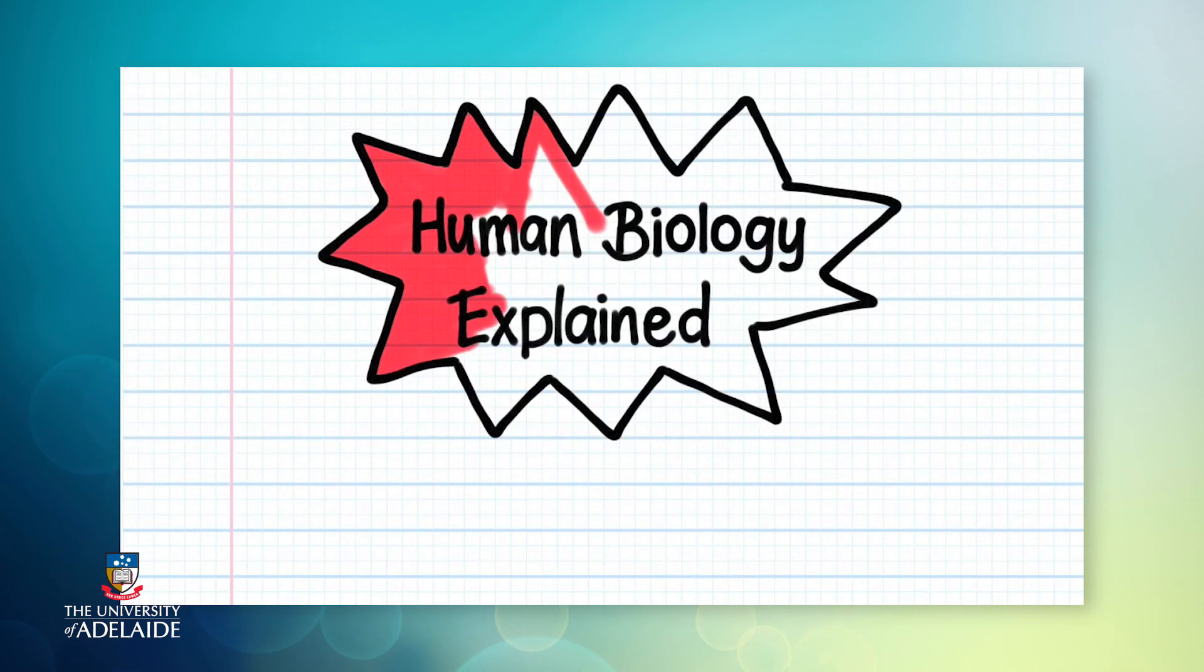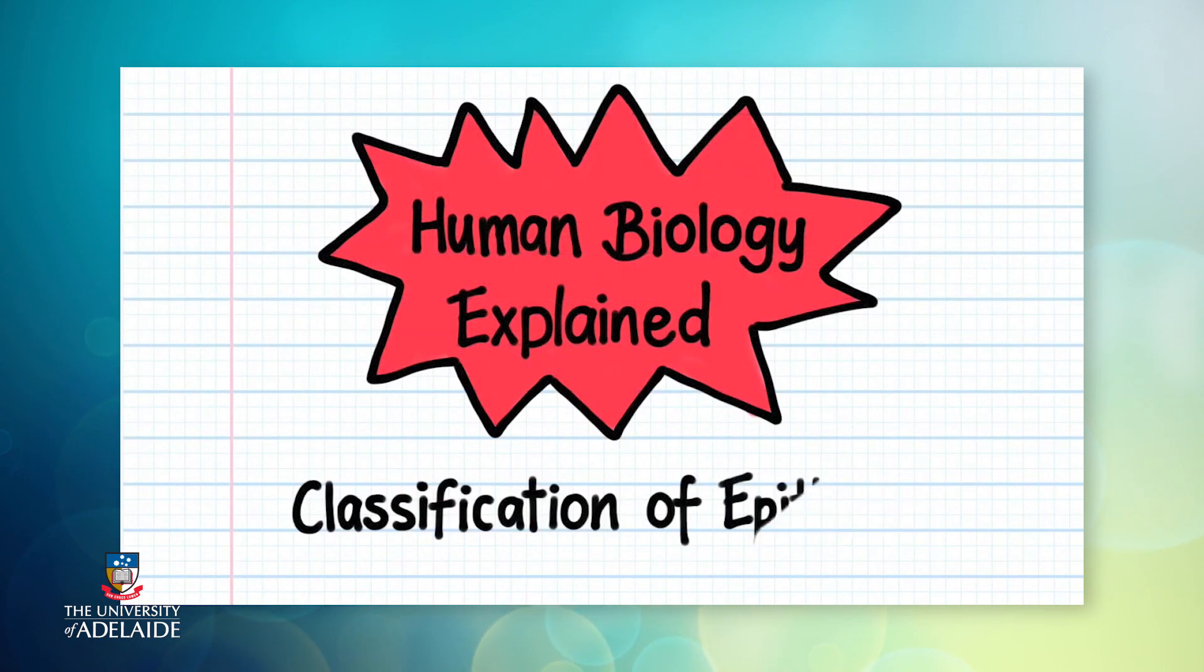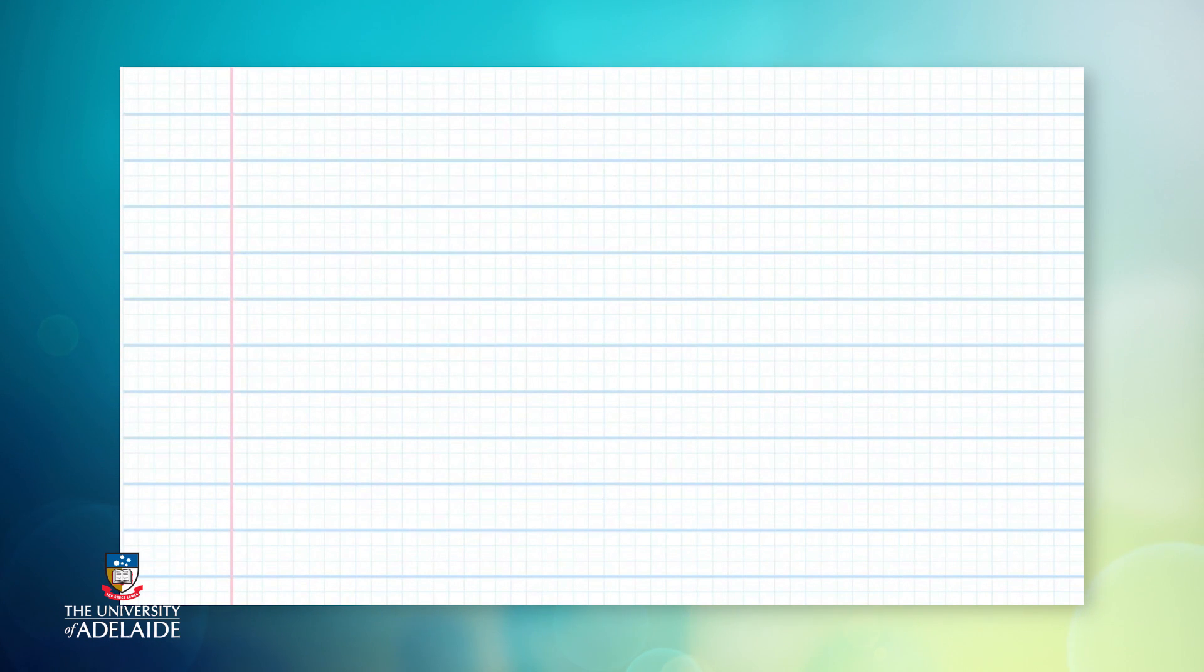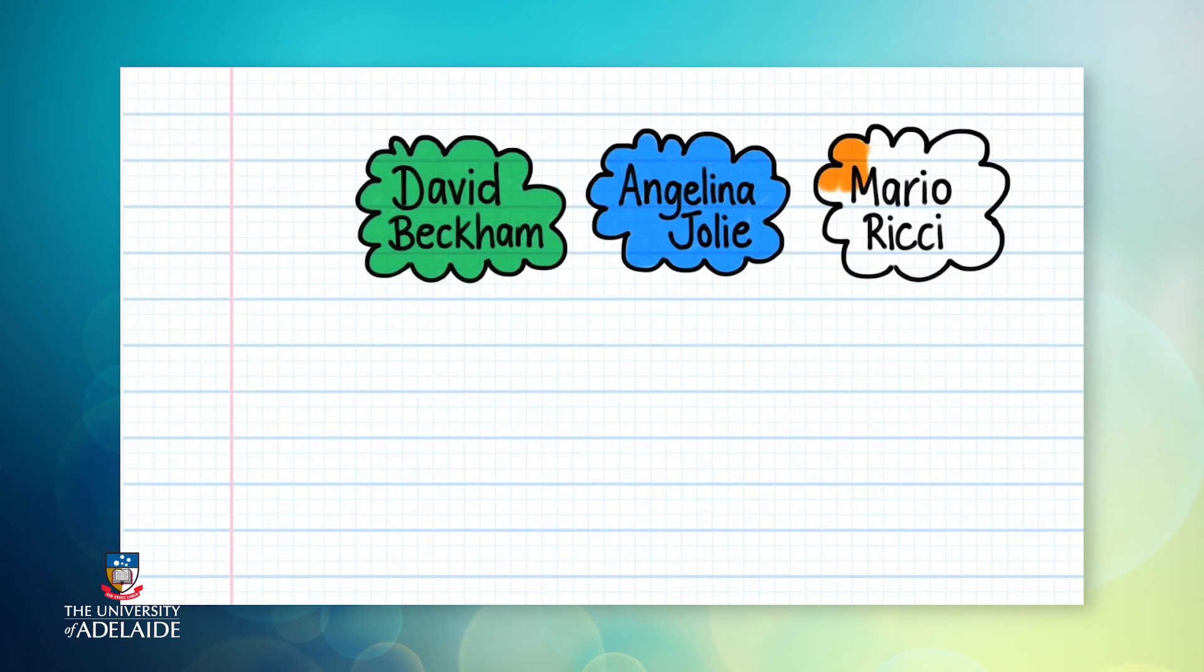Here's a short animation which I've prepared to help explain the concept of classifying epithelia. Recently, I discovered on Wikipedia that David Beckham, Angelina Jolie and I are all the same age. That got me thinking. Do we have anything else in common?